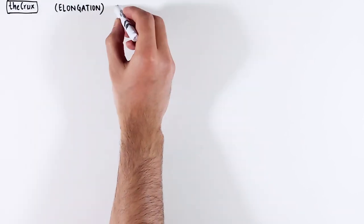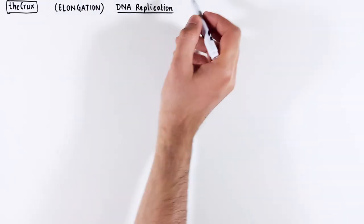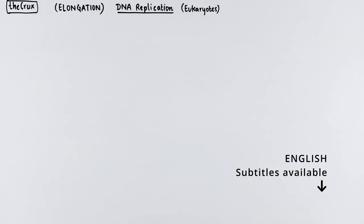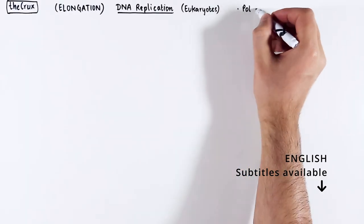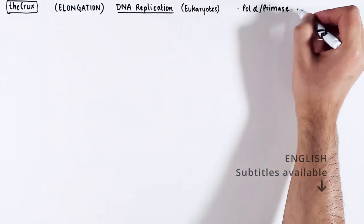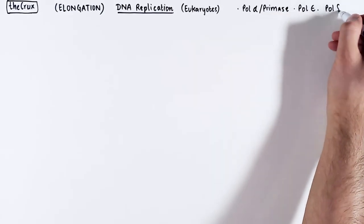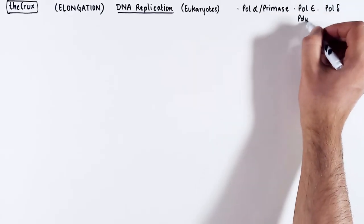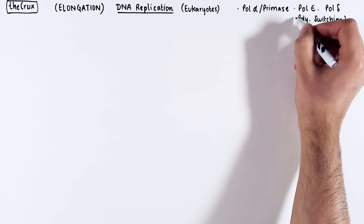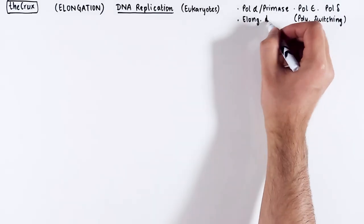In this video we will discuss the elongation step of DNA replication in eukaryotes. Specifically, we will see how polymerase alpha, primase, polymerase epsilon and delta actually perform the elongation step.